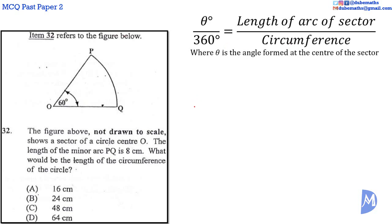So in this question, theta is equal to 60 degrees. We have 60 over 360 is equal to the length of the arc of the sector. The length of the arc of the sector PQ is given as 8 centimeters over the circumference.